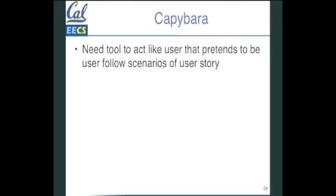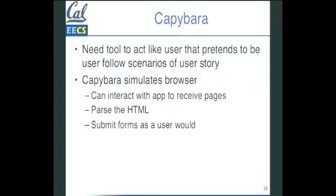Alright, but now how do you invoke the app? How do you get to go through the scenarios? That's another program called Capybara. So we need this, there's lots of examples of this. The current one is Capybara. That's the kind of what happens in Rails. The people are inventing new tools all the time. So we need a tool that pretends to be the user following the scenarios of a user story. We need something to act out the user stories. Capybara is that program. What it does is it simulates a browser. It can interact with the app receiving pages. It can parse HTML and submits form as a user would. So it's pretending to be as you're interacting with the browser invoking your application.